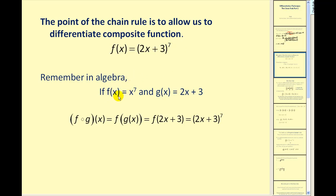Remember in algebra, if we let f of x equal x to the seventh and g of x equal 2x plus 3, and if we were asked to find the composite f of g, by definition we'd start with the inner function g of x equal to 2x plus 3. This would be our input into f, and the result would be the quantity 2x plus 3 raised to the seventh power.